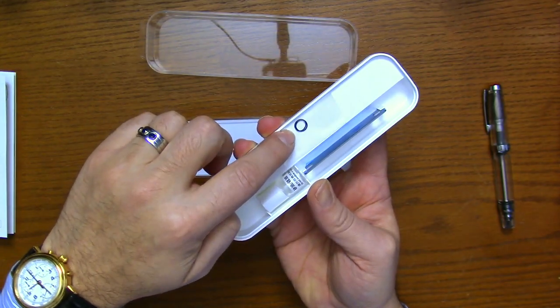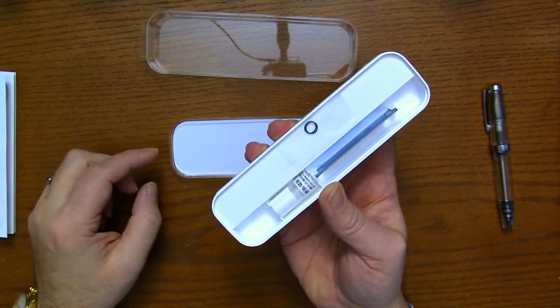You've got two spare o-rings, some silicone grease, and your TWSBI wrench.